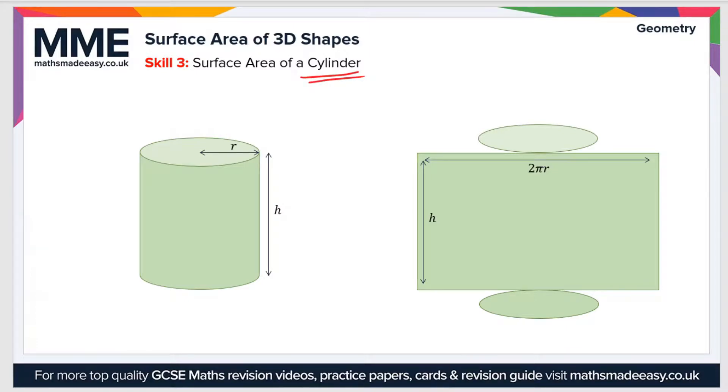When you calculate the surface area of a cylinder, it helps if you think about it in terms of three separate faces. In the cylinder there are two circular faces on the top and the bottom, and then there's the rectangular face which wraps around the whole thing.